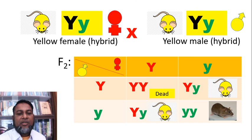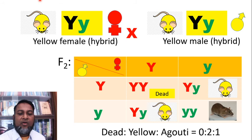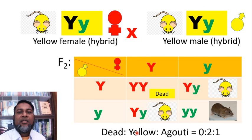The capital Y, capital Y genotype is not found in nature due to the lethal gene. Therefore, the ratio of yellow to agouti is 2 to 1. So, the ratio produced by lethal genes is 2 to 1.